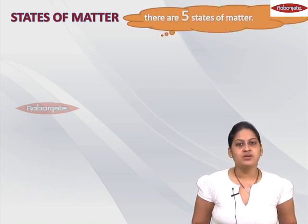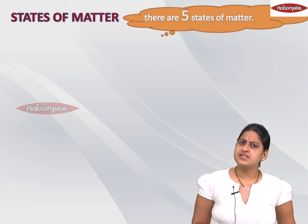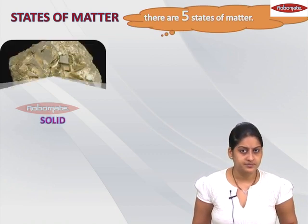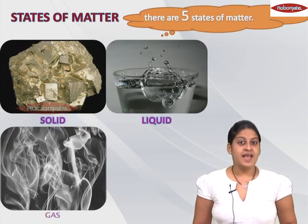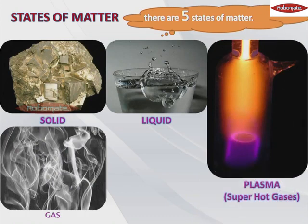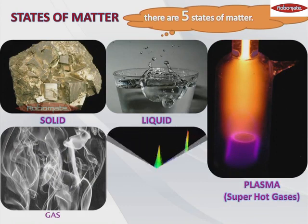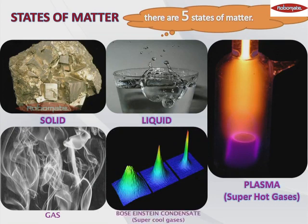Let us list down the five states of matter. The first three states — many of you know — are solids, liquids, and gases. The fourth state of matter is plasma, which is known as the super hot gases. The fifth state of matter is Bose-Einstein condensate, which is known as the super cool gases. In this chapter, we are going to deal only in detail about solids, liquids, and gases.